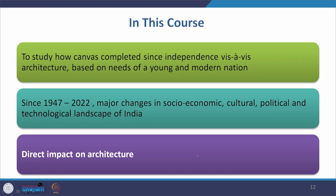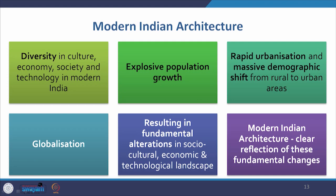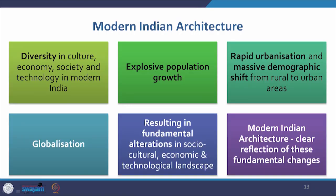Since 1947 till 2022, major changes have taken place in the socio-economic, cultural, political, and technological landscape of India, and that has had a direct impact on architecture. Modern Indian architecture is influenced by the diversity of our culture, economy, society, and technology. There is also explosive population growth, rapid urbanization, massive demographic shift from rural to urban areas, and the great big factor of globalization — all resulting in fundamental alterations in the socio-cultural, economic, and technological landscape.